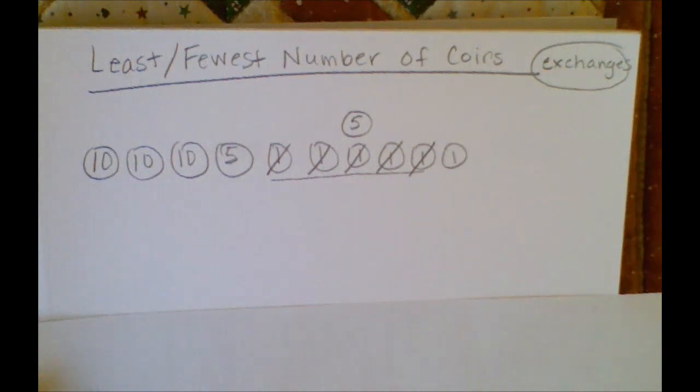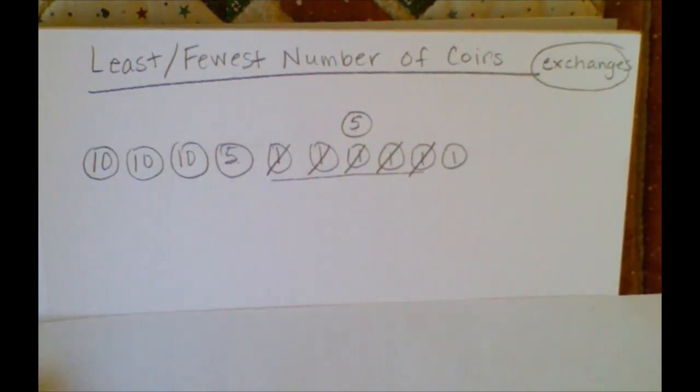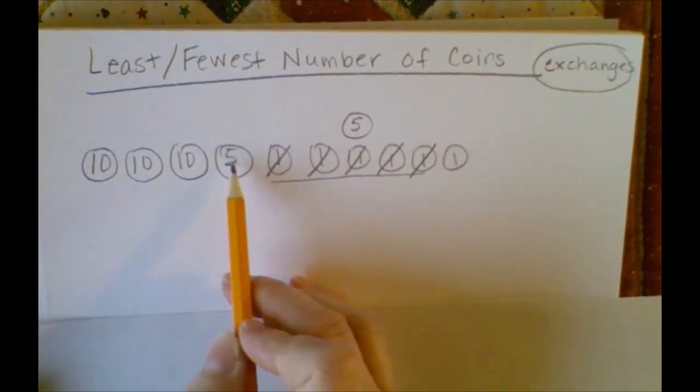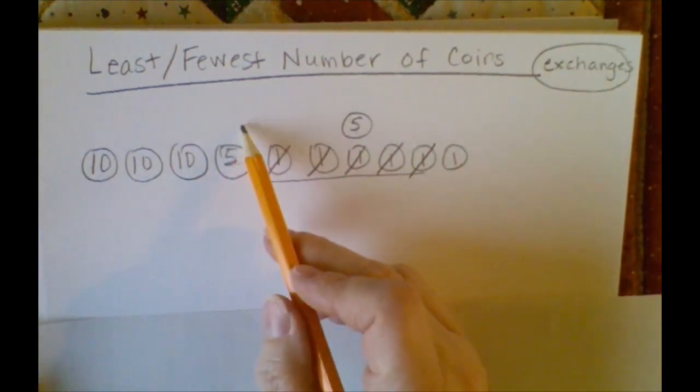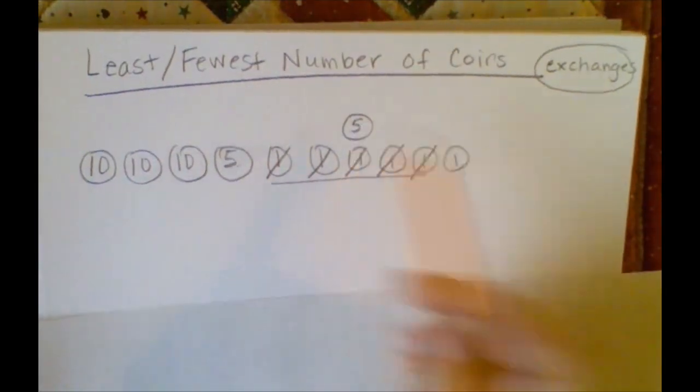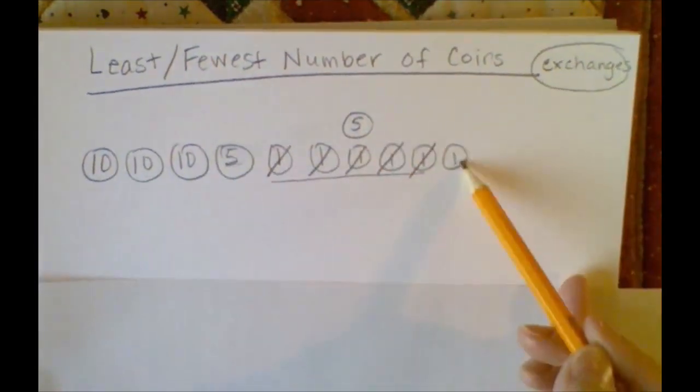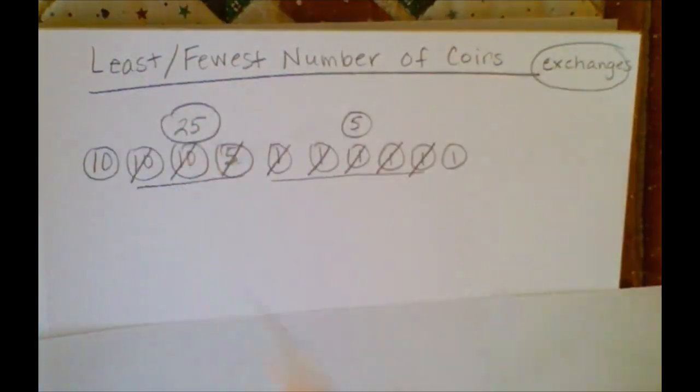Five pennies make a nickel, two nickels make a dime. We could do that, but I'm going to go one step further. Two dimes and a nickel make a quarter every time. We could make this exchange but then we'd have 40 cents. If we take this one out for the quarter, now we're down to one, two, three, four coins, which is the least amount or the fewest amount of coins that we could have for this amount of money.